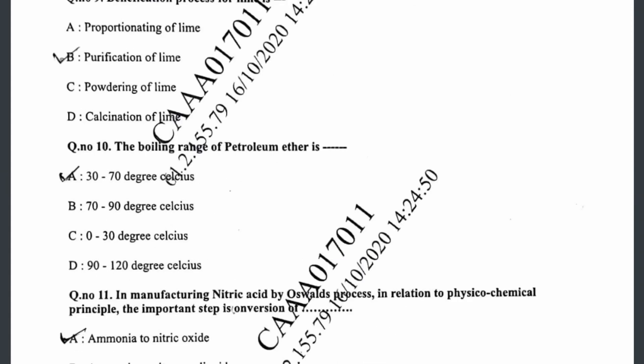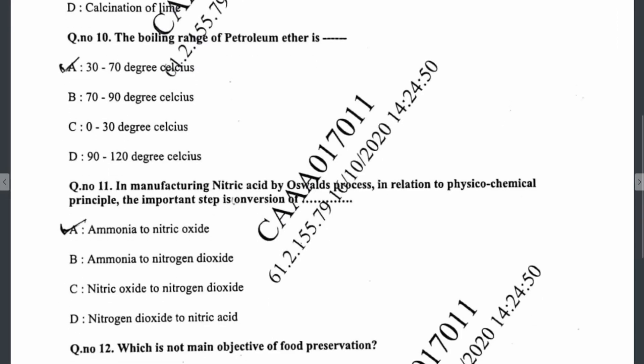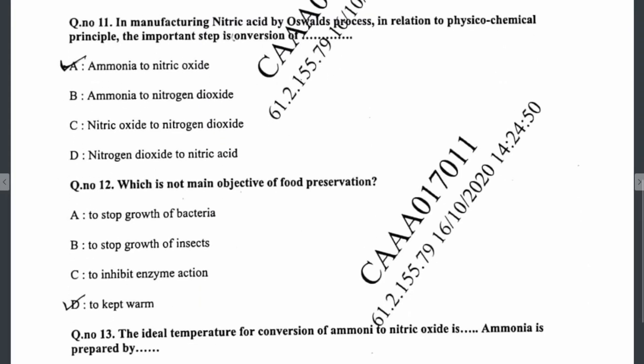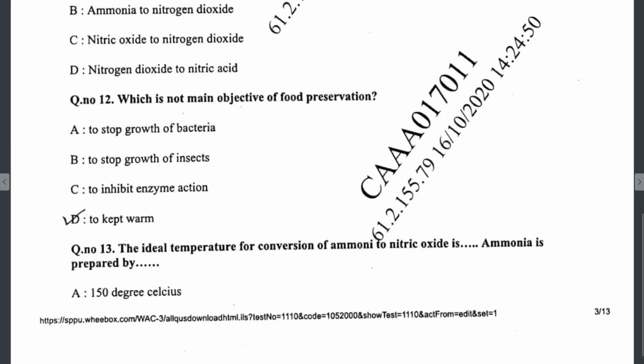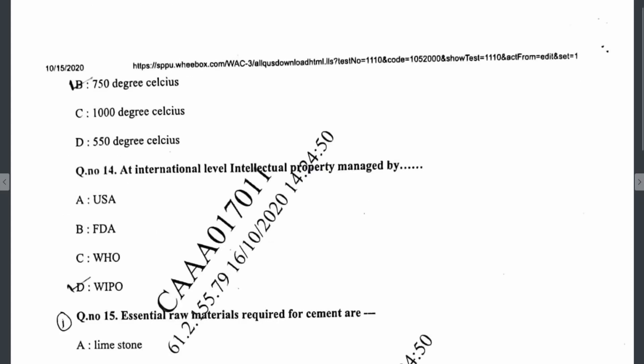Question eleven: in the manufacturing of nitric acid by Oswald's process, the important step in relation to physico-chemical principle is the conversion of ammonia to nitric oxide. Question twelve: the answer to which is not the main objective of food preservation is 'to keep warm' — it is not a main objective. Question thirteen: the ideal temperature for conversion of ammonia to nitric oxide is over 750 degrees Celsius in Oswald's process.